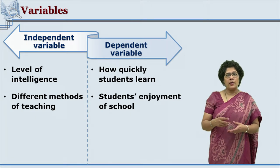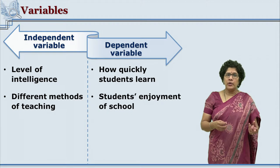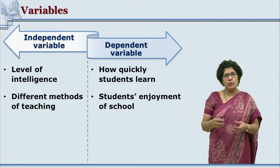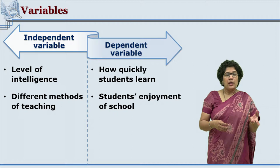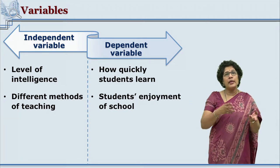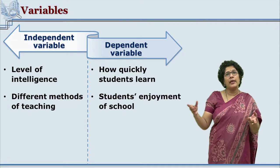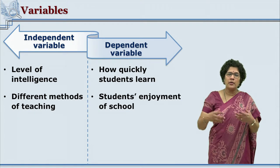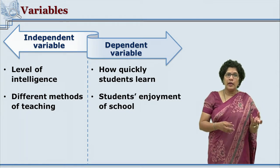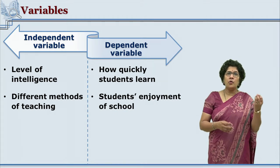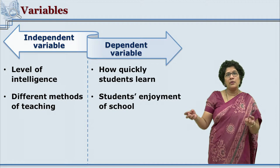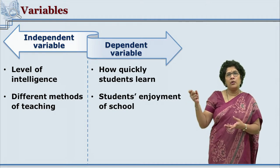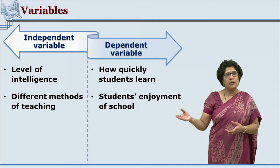Consider another example: a researcher is studying the relationship between how quickly a student learns and the student's enjoyment in school. It may be possible that a student is able to quickly grasp concepts — the question is whether this has any impact on the student's liking for school. In this case, the independent variable is the student's ability to quickly grasp concepts, and the dependent variable is the level of enjoyment the student has in school.